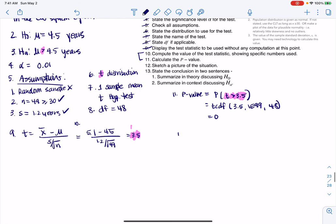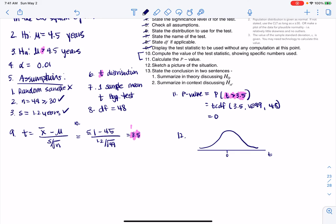If we were to draw our T distribution, I would have a T here, a zero here. You can imagine this would be about one, two, three. So 3.5 would be all the way over here. If I tried to shade that area, it would basically be zero.